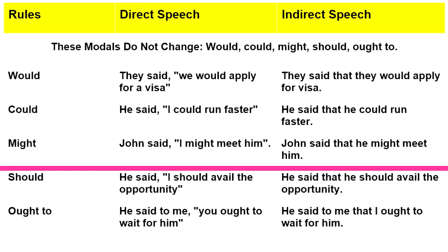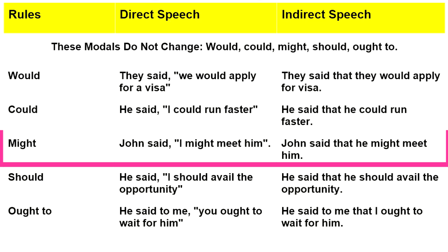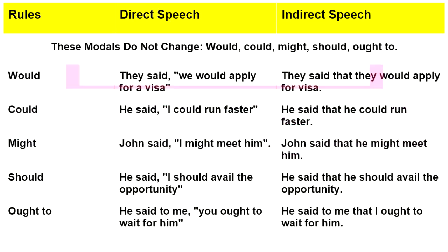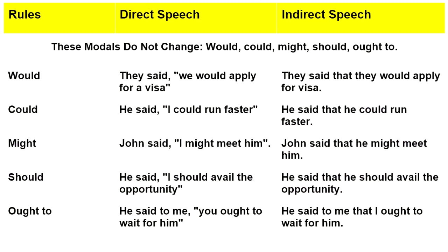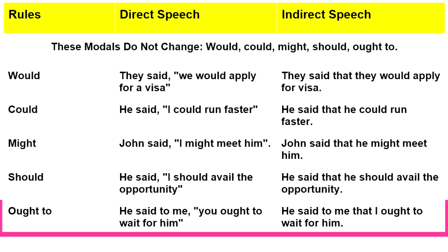With 'might': John said, 'I might meet him.' In indirect speech: John said that he might meet him. With 'should': he said, 'I should avail the opportunity.' In indirect speech: he said that he should avail the opportunity. With 'ought to': he said to me, 'You ought to wait for him.' In indirect speech: he said to me that I ought to wait for him.